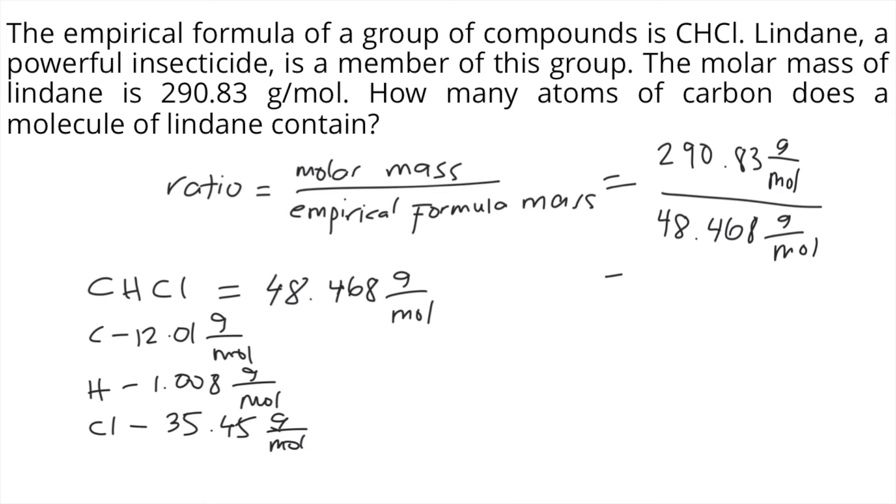So 290.83 divided by 48.468. The ratio, if you round it to the nearest whole number, is approximately equal to 6.